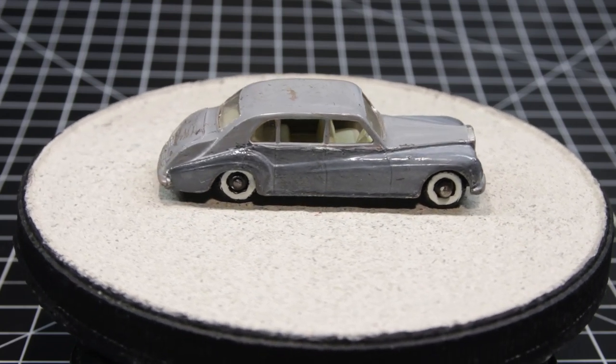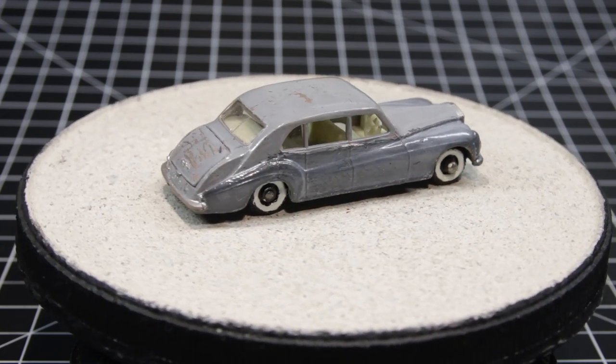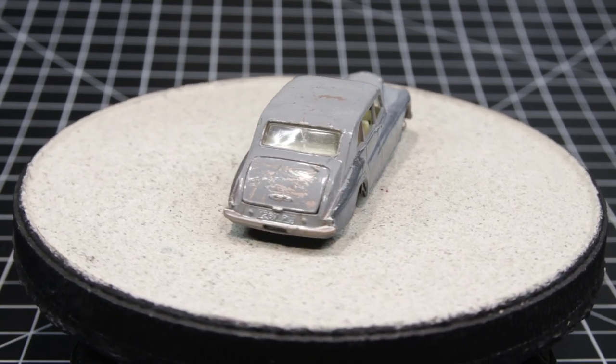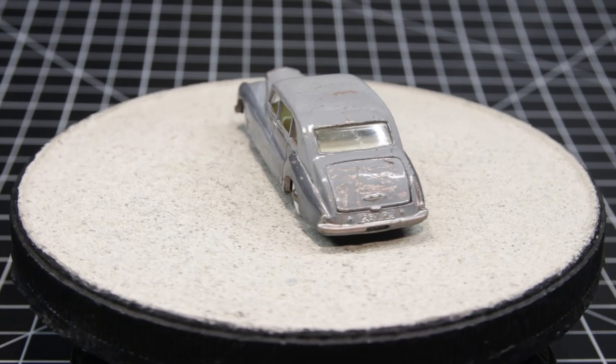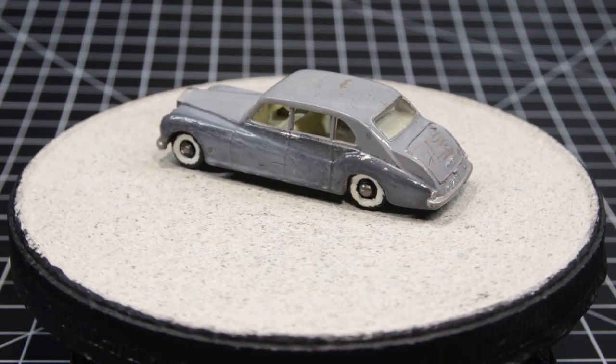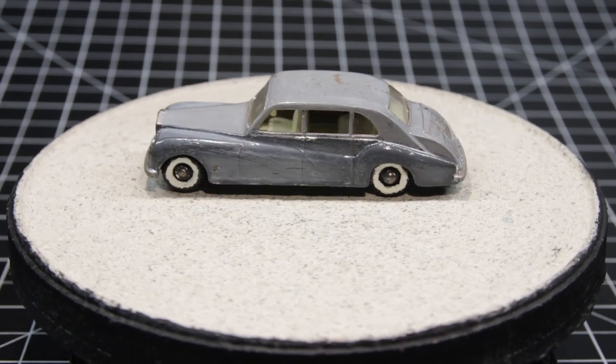This is a 44B Rolls Royce Phantom 5. Lesney produced this from 1964 to 1966. Generally, some form of mauve. They can also be found in a silvery gray. Fred the Pink guy was out of red that week.